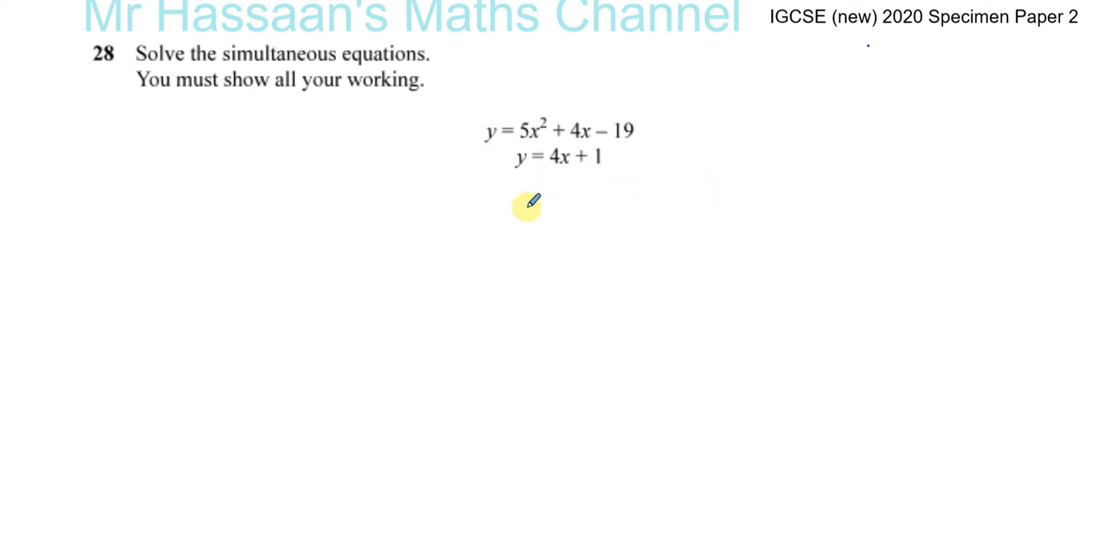This particular one is not such a problem because if you want to solve these simultaneously, you can use some sort of substitution. We know that 5x squared plus 4x minus 19 equals y, and we know that 4x plus 1 equals y, so basically that's when they're equal to each other. 5x squared plus 4x minus 19 is equal to 4x plus 1.